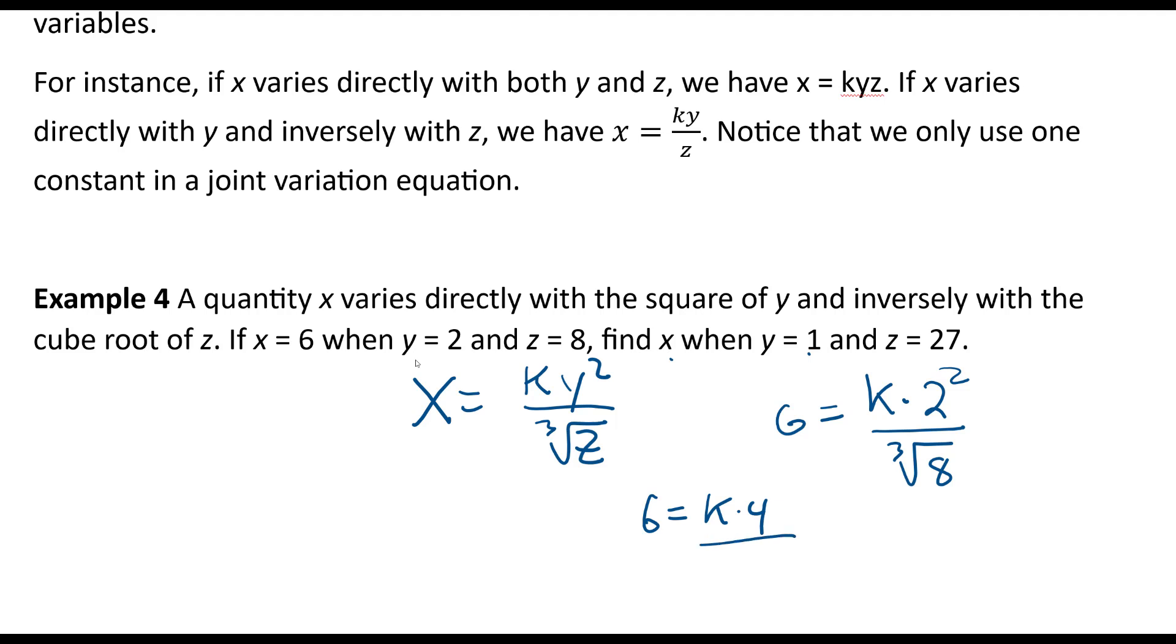The 4 and the 2 would reduce, leaving a 2 here. We would have 6 equals 2k, and divide by 2, k must be 3.